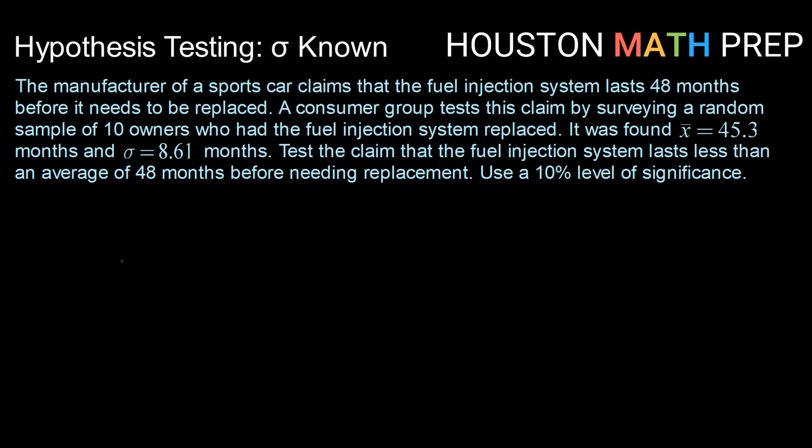Here's our setup. The manufacturer of a sports car claims that the fuel injection system lasts 48 months before it needs to be replaced. A consumer group tests this claim by surveying a random sample of 10 owners who had the fuel injection system replaced. The mean of the sample was 45.3 months, and we know that sigma, or the population standard deviation, is 8.61 months. We want to test the claim that the fuel injection system lasts less than an average of 48 months before needing replacement. Use a 10 percent level of significance.